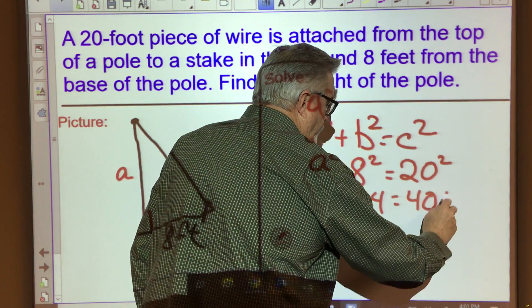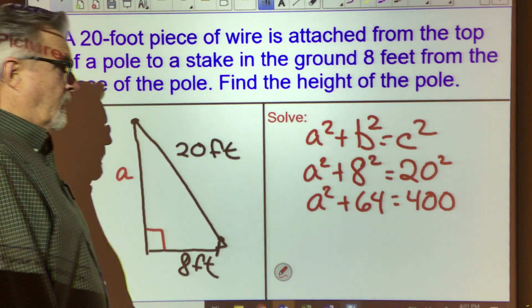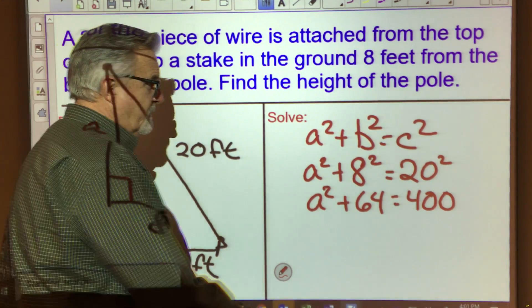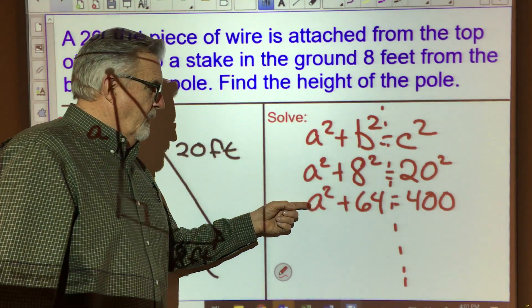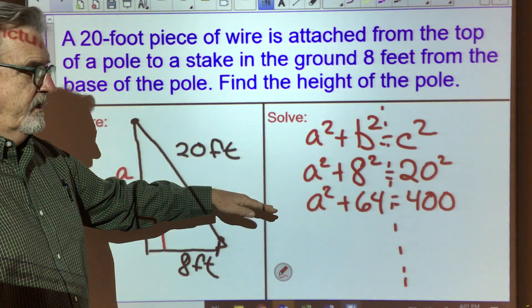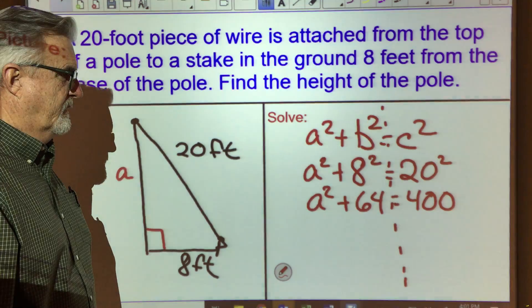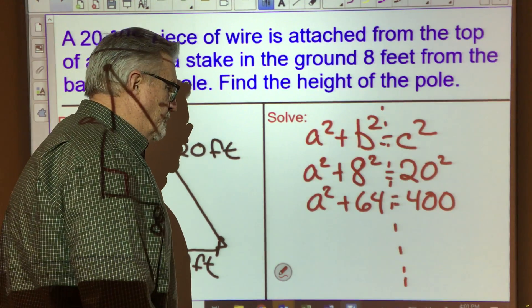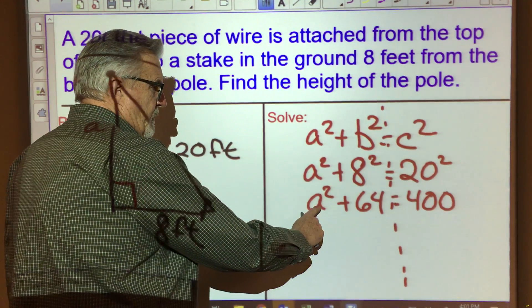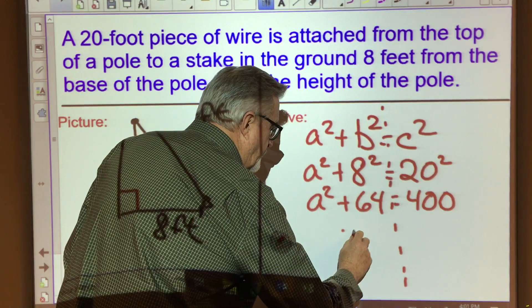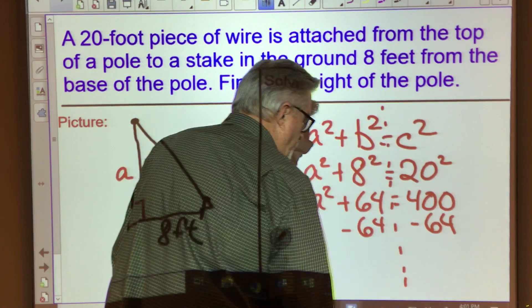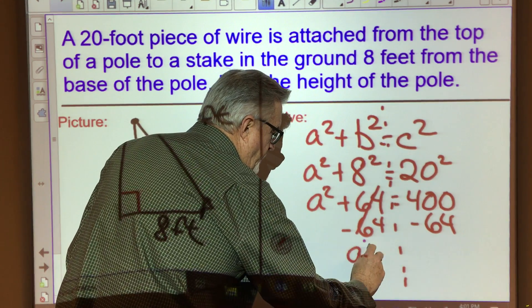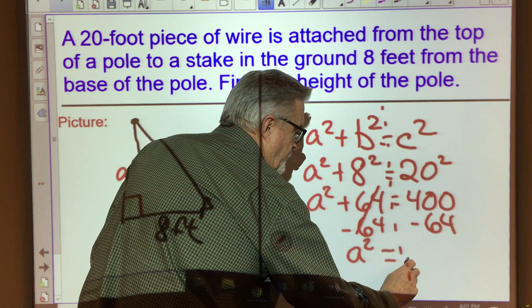On this one, if we take a look at it and we look at the two halves of our equation, our variable is not isolated. It's not on one side of the equation by itself, which means we're going to have to do the inverse. They're adding 64, so we're going to subtract 64 from both sides. When we subtract 64 from both sides, we're going to have a² = 336.